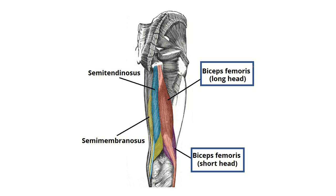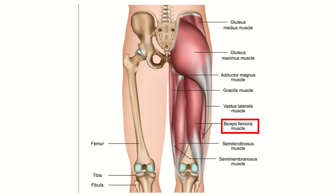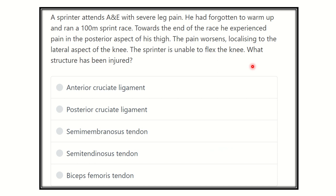Hi everyone, welcome to another question and answer session for MRS exam. A sprinter attends accident and emergency with severe leg pain. He had forgotten to warm up and ran a 100-meter sprint race. Towards the end of the race, he experienced pain in the posterior aspect of his thigh, localizing to the lateral aspect of the knee. The sprinter is unable to flex the knee.